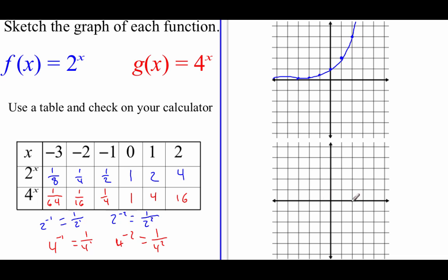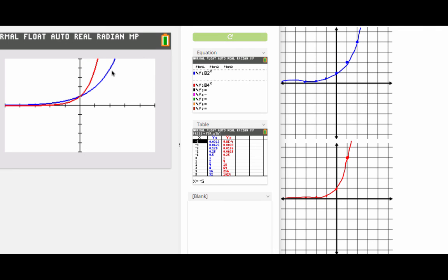So plotting this one out on the bottom graph, at negative 3 we're at 1 over 64 — really close to that x-axis. At negative 2, we're at 1 sixteenth, still pretty close to the x-axis. Then we're up at 1 fourth, then up to 1, then up to 4. And that last value takes us off the graph because we'd be up at 16. So we're really flat along this x-axis and then our graph starts to increase very quickly. I've got both functions typed into my calculator to check our answers. The blue graph represents 2 to the x power and the red one represents 4 to the x power — I think these graphs look pretty close.